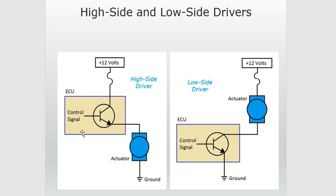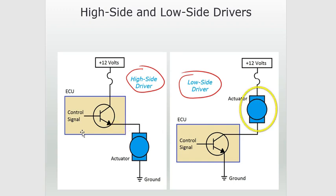There are basically two ways that we can lay out these output circuits. We can have a high side driver or we can have a low side driver. The only difference is that the high side driver supplies power to the actuator or output device. On the other hand, with a low side driver, the motor is already connected to battery voltage — it needs a ground, and its ground is completed through the transistor in the ECU. When diagnosing output circuits, it's really important to be able to tell whether we're dealing with a high side or low side driver, and it's very easy to do.